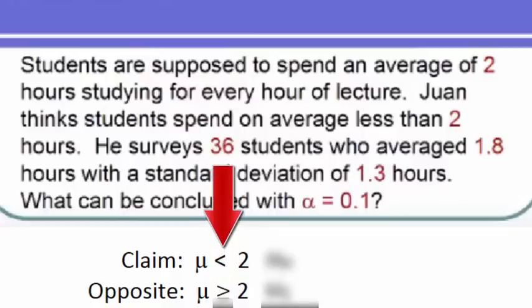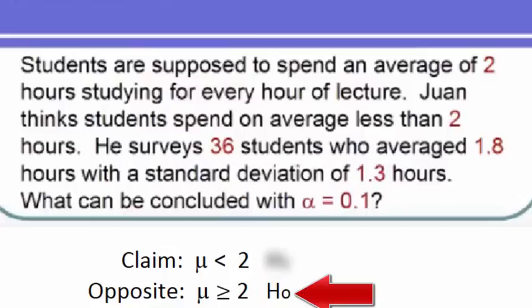Next, we identify the null hypothesis, and to do that, we look for the inequality symbol that contains the equal sign. And we see that in this case, the null hypothesis is the opposite of the claim.